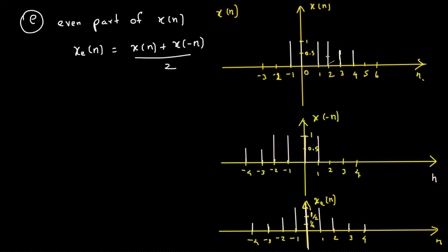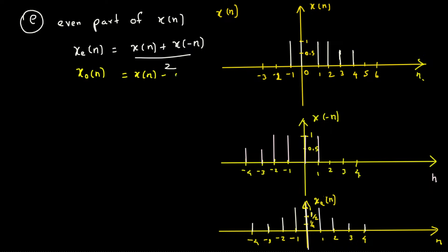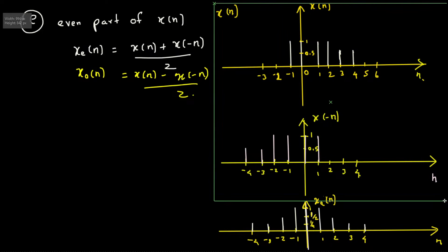x of minus n is flipped on the y-axis, so it's exactly the opposite — whatever is positive here appears at the negative side. When you add x of n and x of minus n and divide by two, you get the even function graph. For the odd function, the equation is different: it's x of n minus x of minus n, divided by two. I'll copy these two graphs since I'll need them for the next part.